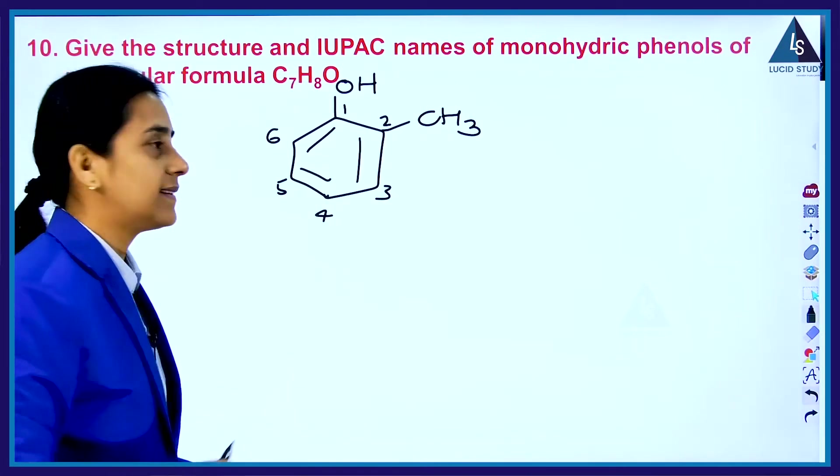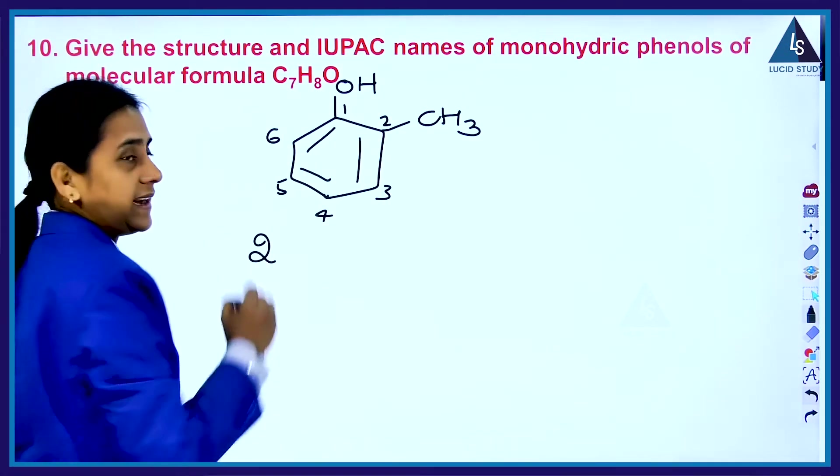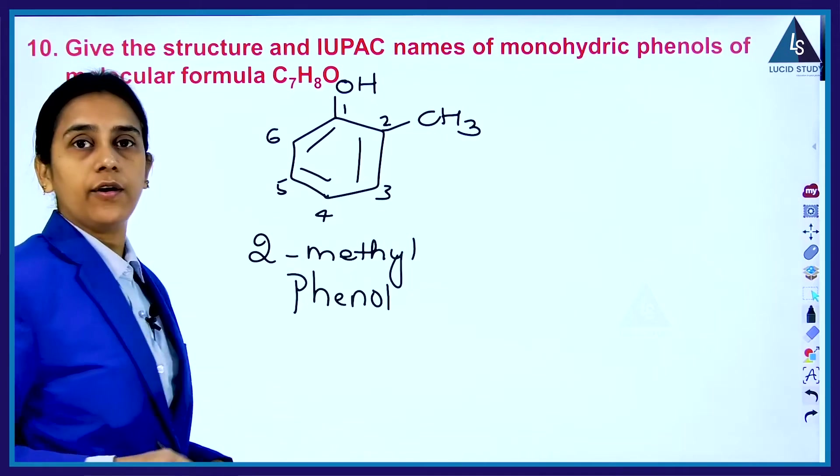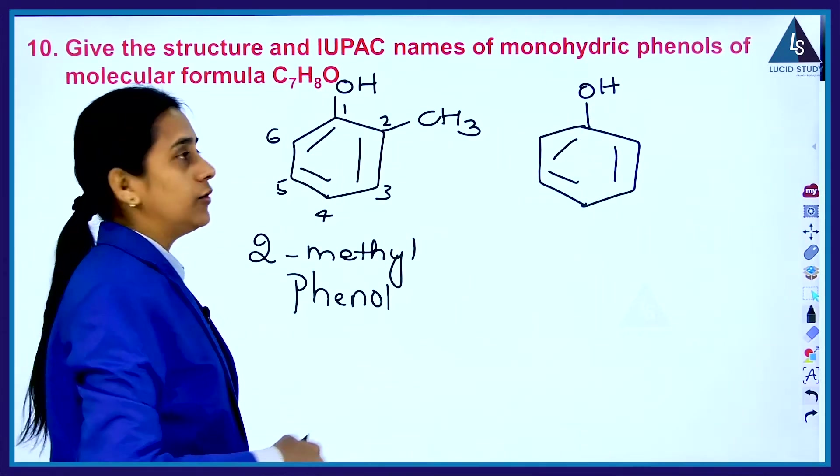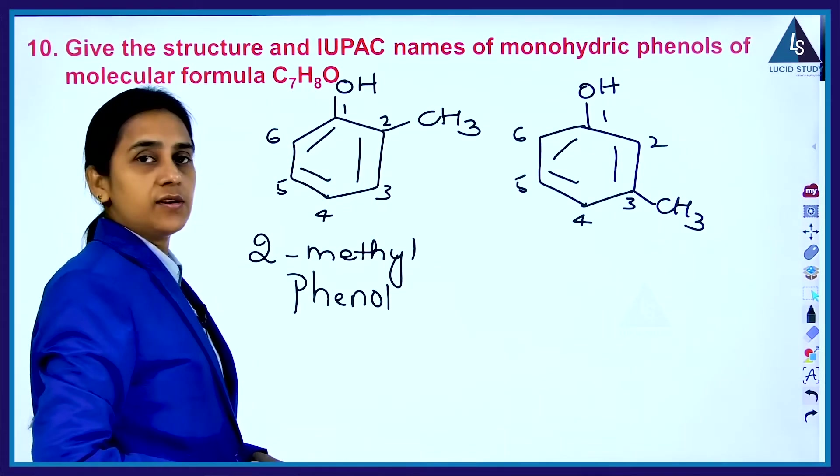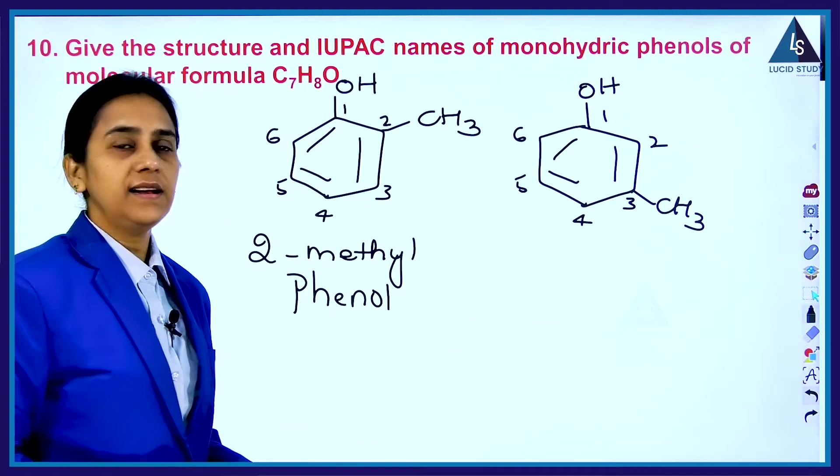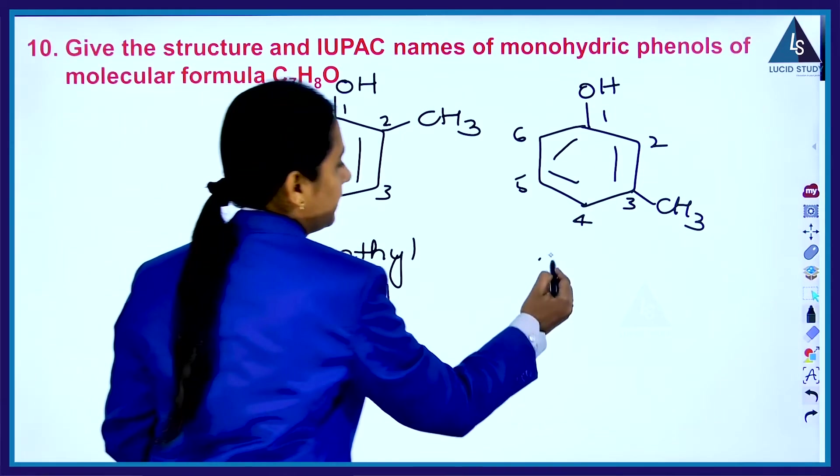The numbering is one, two, three, four, five, six. So with this formula we can make a structure like this, it's a monohydric phenol. The name of this, the IUPAC name of this, it is 2-methyl phenol. And the same thing, benzene with OH group, I am changing the position of the methyl group now.